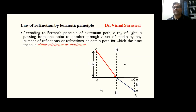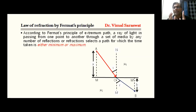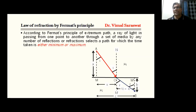Now, the normal is drawn on the surface M-M'. I is the angle of incidence — the angle made by the incident ray with the normal — and R is the angle of refraction — the angle made by the refracted ray with the normal. From geometry, angle MAO equals i and angle OBM' equals R. Let MO equal to x and MM' equal to c. So, OM' will be MM' minus MO, or OM' equals c minus x.